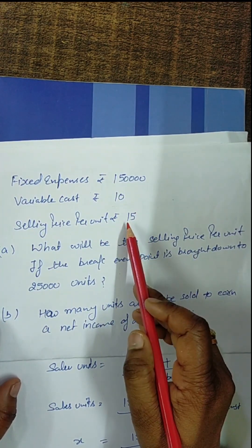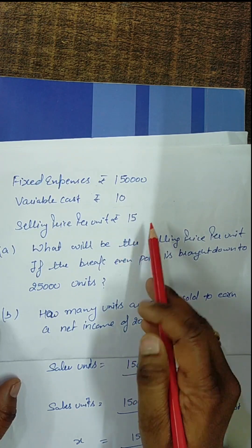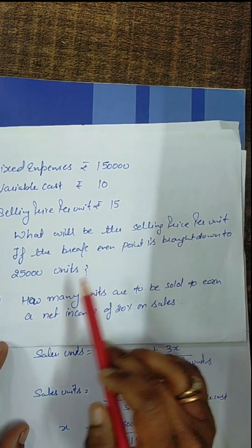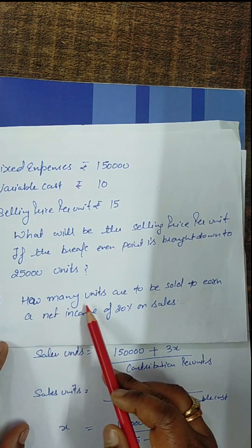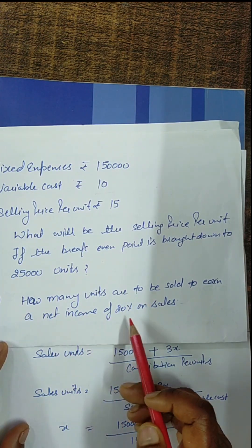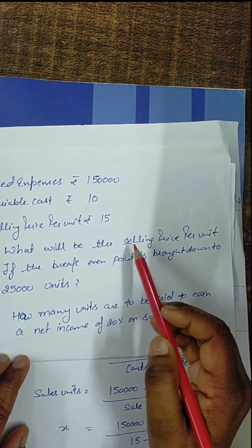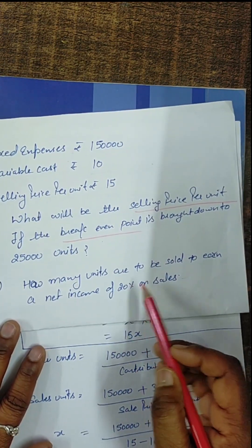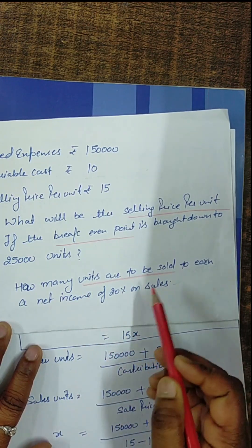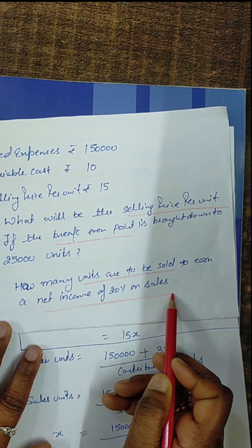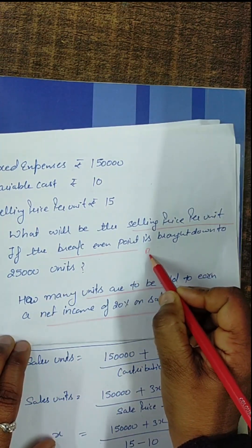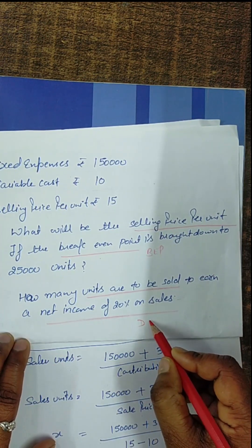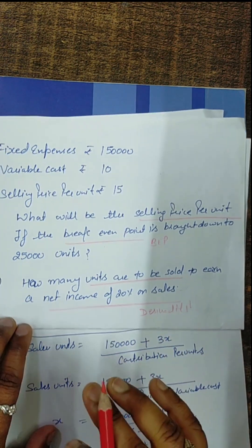In this practical, we have fixed cost of ₹1,50,000, variable cost of ₹10 per unit, and selling price of ₹15 per unit. There are two questions: first, what will the selling price per unit be if the break-even point is brought down to 25,000 units? Second, how many units are to be sold to earn a net income of 20% on sale?